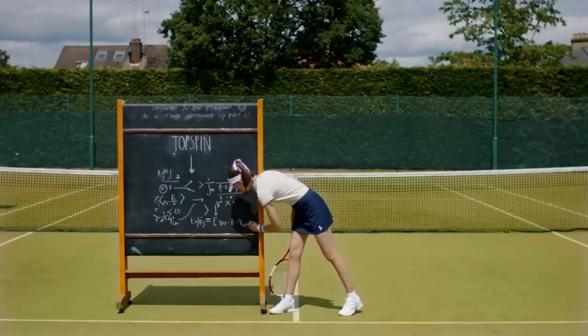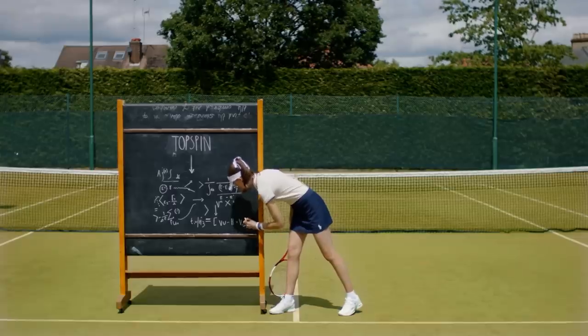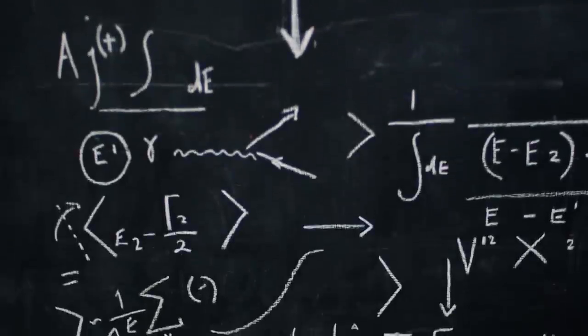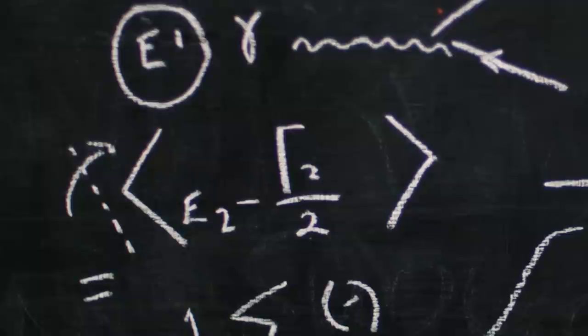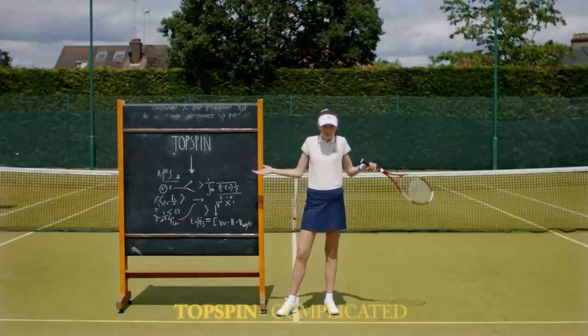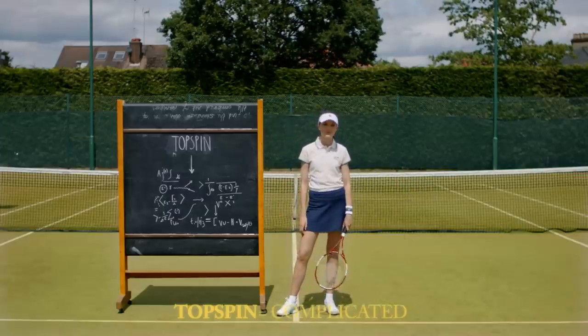Topspin: spin of a ball where the top of the ball rotates towards the direction of travel. The spin goes forward over the top of the ball, causing the ball to dip and bounce at a higher angle.